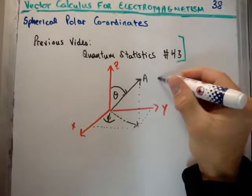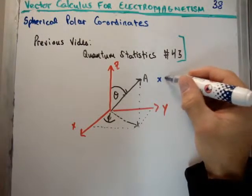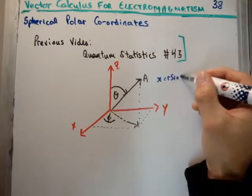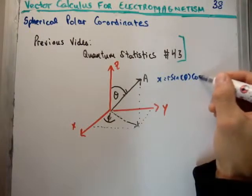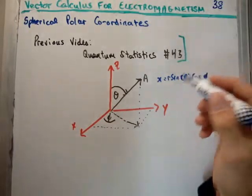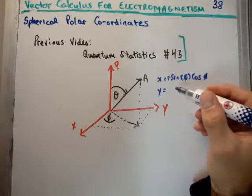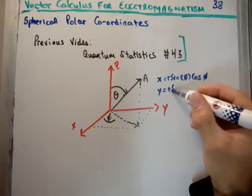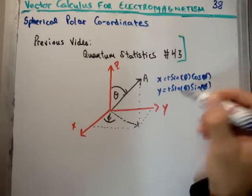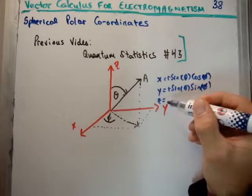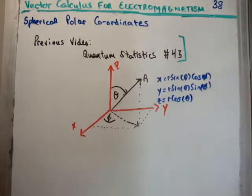Now, what we do is how to transform from rectangular to polar coordinates is we note that x is equal to r sin theta cos phi. Something I've proved in the video on quantum statistics. y is equal to r sin theta sin phi. And finally, z is equal to r cos theta. There are the transformations.